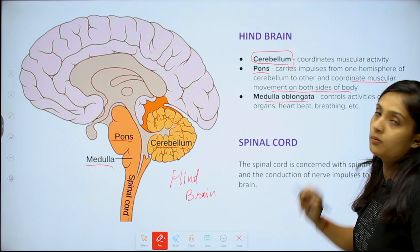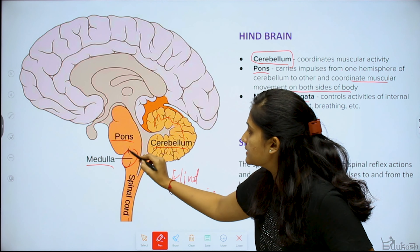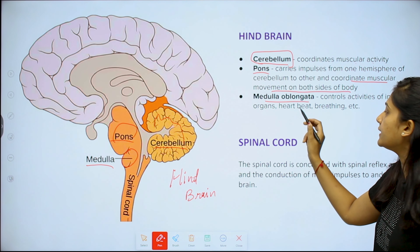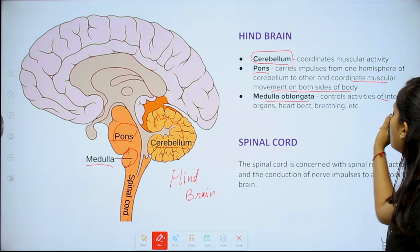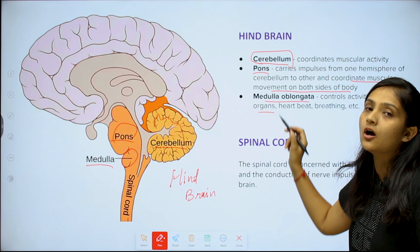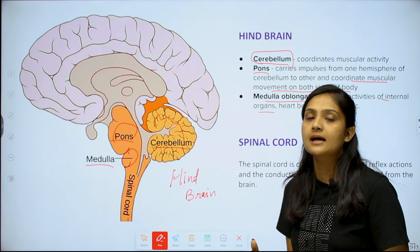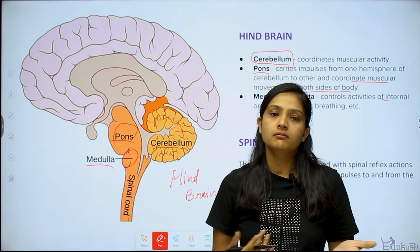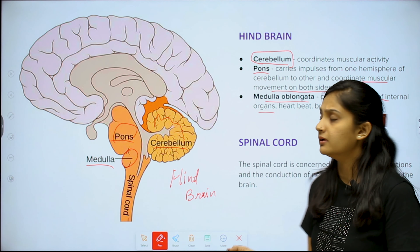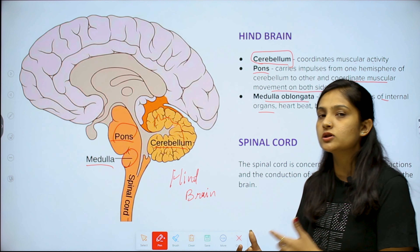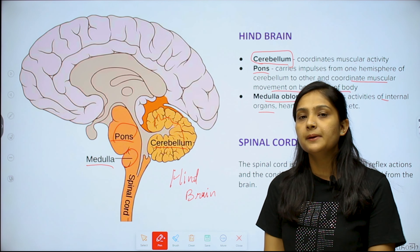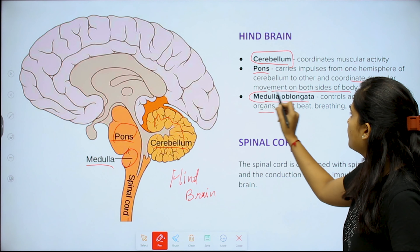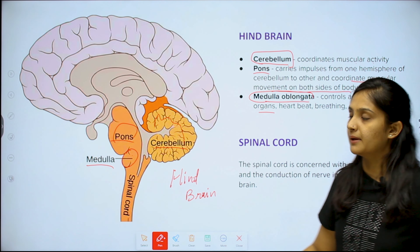The medulla oblongata controls activities of internal organs. Internal organs such as the lungs, heart, and stomach all work through the medulla oblongata — respiration, heartbeat, and digestion are all controlled by this part of the brain.